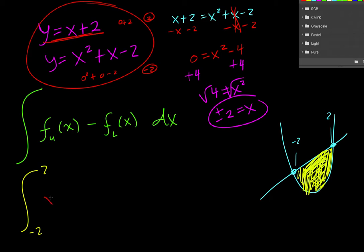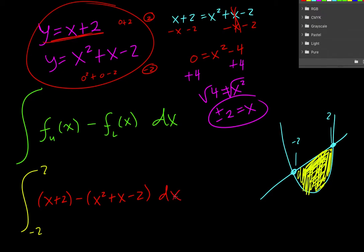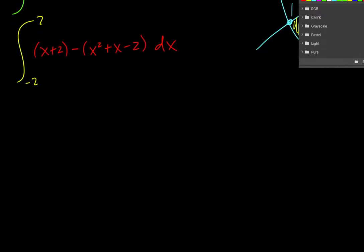So, the upper function. And so we get x plus 2 minus x squared plus x minus 2 dx. We set up our integral. Once it's set up, hopefully it's pretty straightforward. So first I'm going to distribute a negative. So I have x plus 2 minus x squared minus x plus 2. So I just changed all those signs.